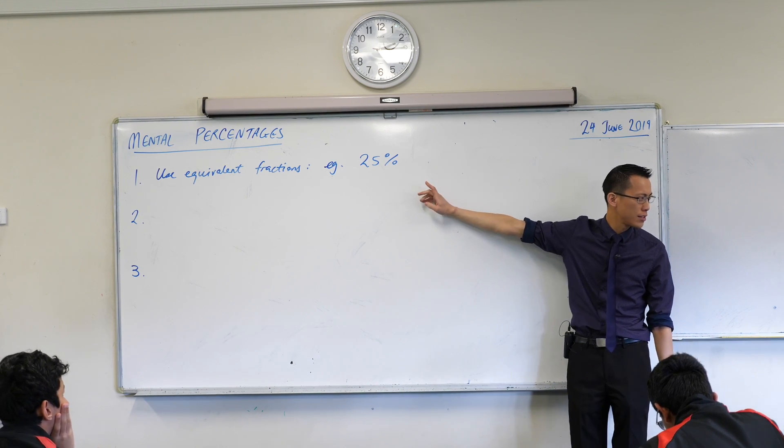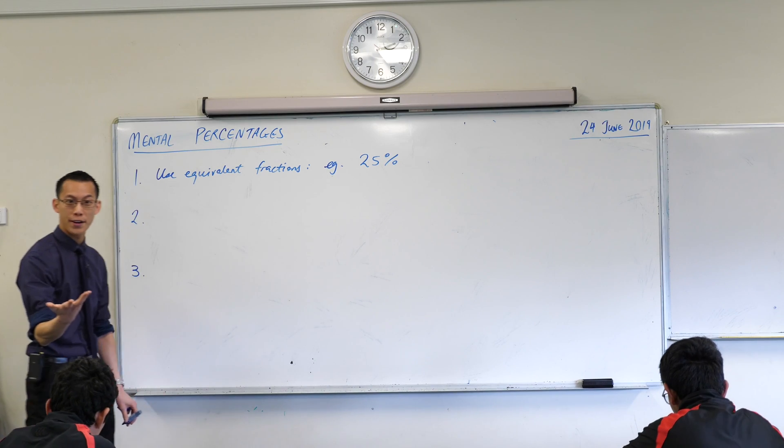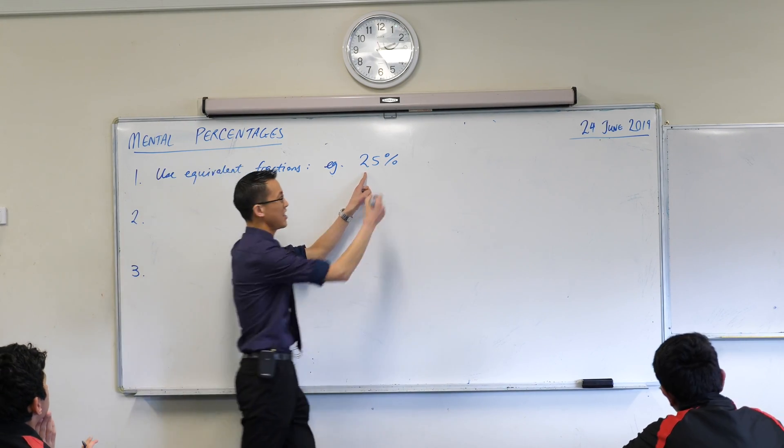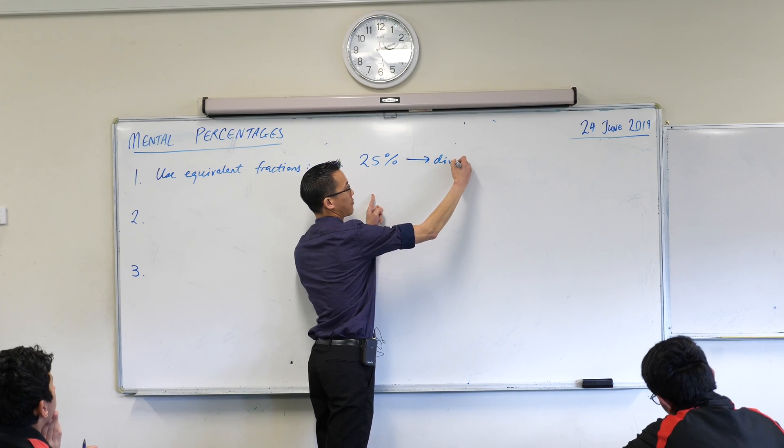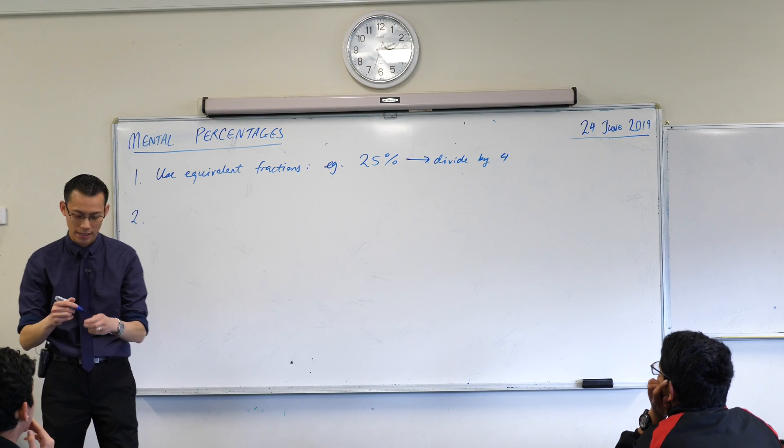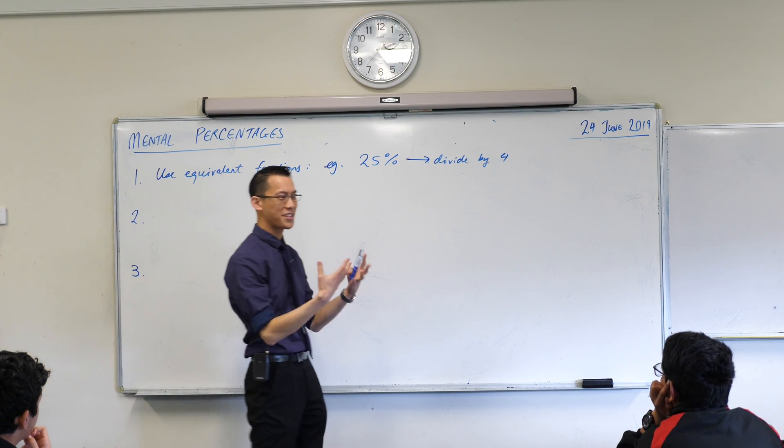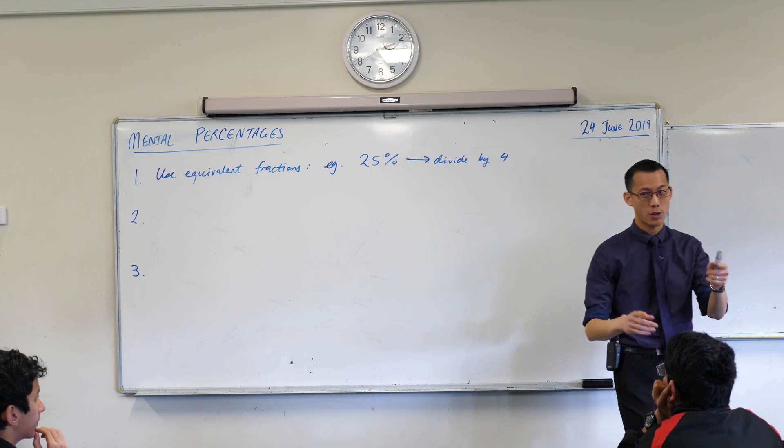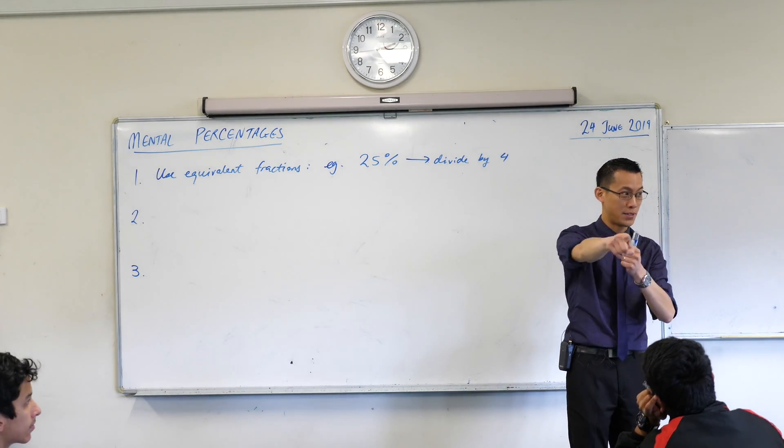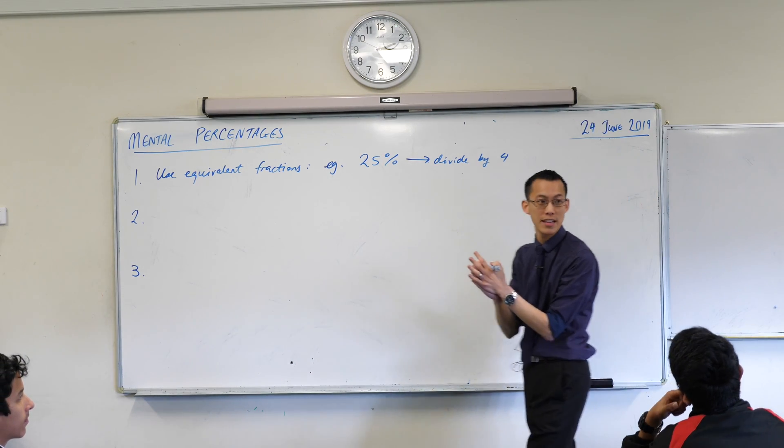For example, if we said 25% of something, then your mind should immediately think, oh I have an equivalent fraction for that that's very simple. What's the equivalent fraction for 25%? Vishak, one over four, very good. So if I wanted you to find out 25% of a thing, take that and essentially divide by four. Can someone give me another example? Jessica, 50%, and the equivalent fraction is? Merrick, one over two.